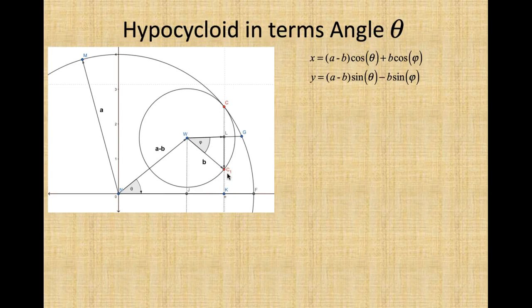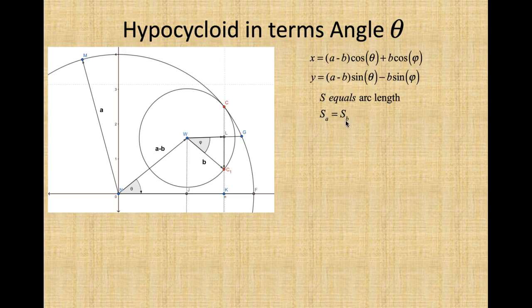Let's continue. So we have our hypocycloid in terms of angle theta and in terms of angle phi. We need to determine, get it in terms of one angle. So S equals arc length. So we have the arc length of A equals the arc length of B. So the arc length of A is equal to (A minus B) theta. And the arc length of B is equal to B sine phi. And since they're equal, we can put them equal to each other.